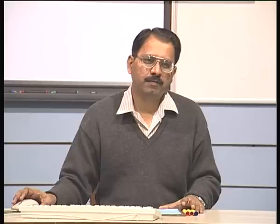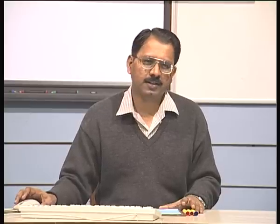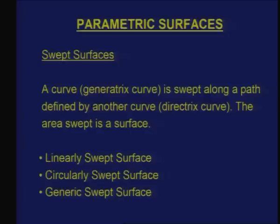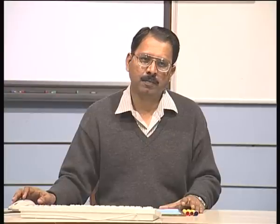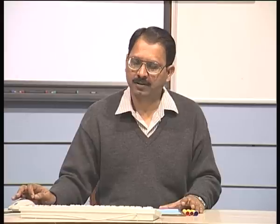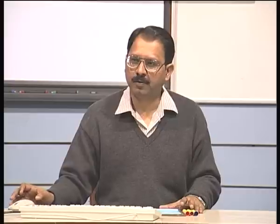One of the most important ways to define a parametric surface is a swept surface, or the concept of sweeping. In a swept surface, you take a curve — it can be a straight line, an arc, or any free-form curve — called the generatrix curve. This is swept along a path defined by another curve called the directrix curve. The area swept by the curve is a surface. Sweeping is not restricted to surfaces: a point swept along a path traces a curve, and u in a parametric equation can be seen as the sweeping direction.